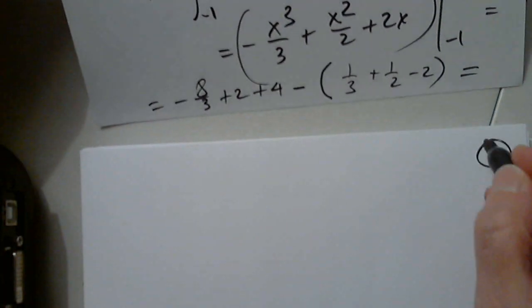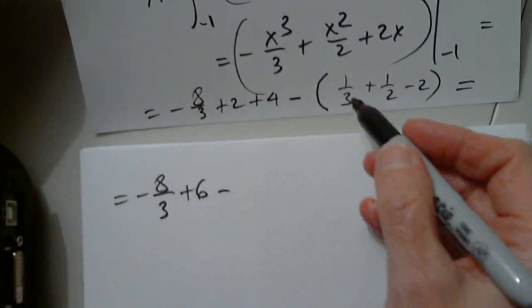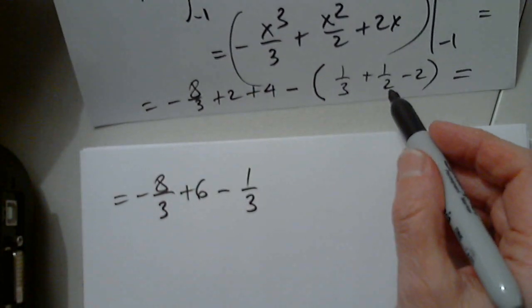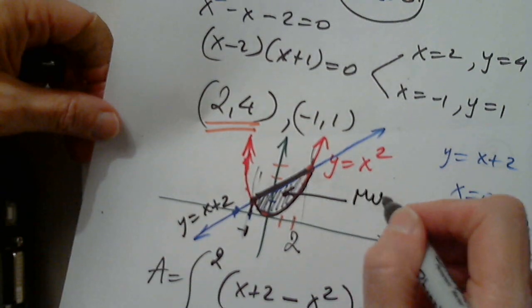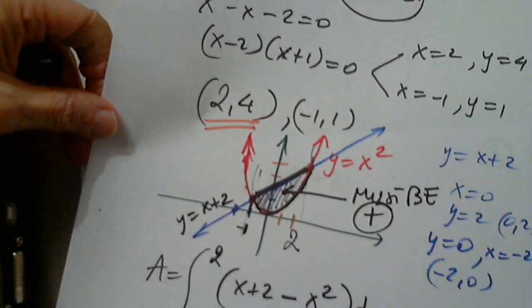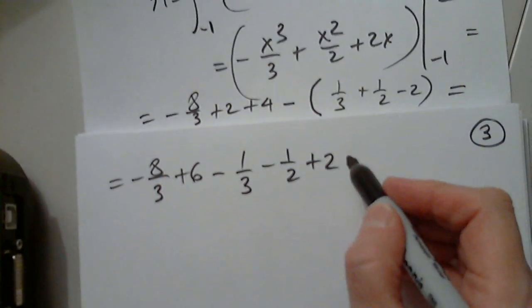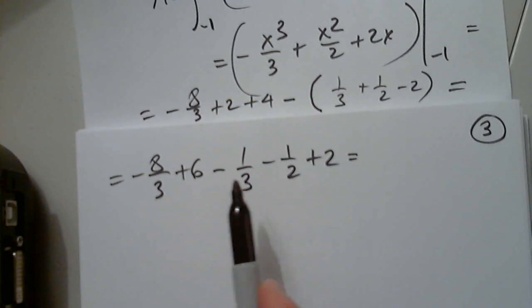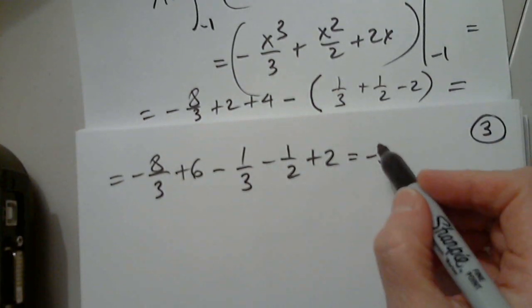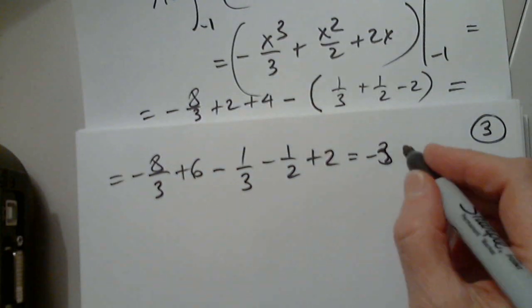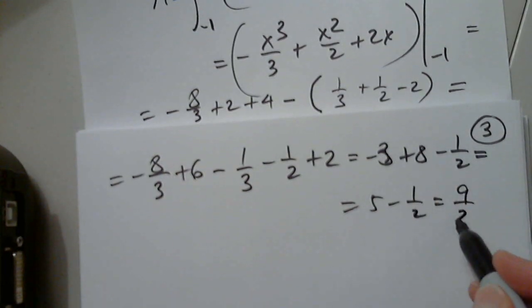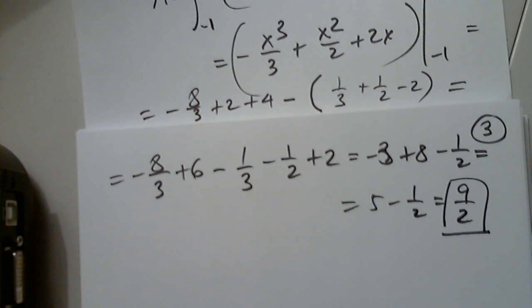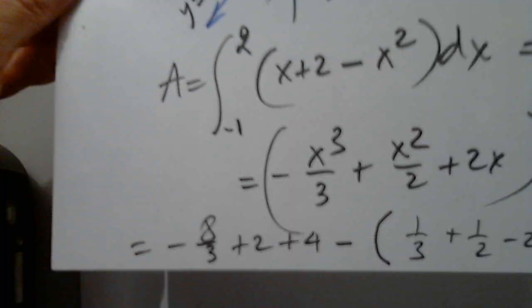So, I determine the number, negative 8 thirds, this is plus 6, this is minus 1 third, this is negative 1 half, and this is plus 2. Remember, this area is enclosed between two graphs, must be positive. Negative 8 thirds minus 1 third is negative 9 thirds, so this is negative 3. 6 plus 2 is 8, and negative 1 half. So, this is 5 minus 1 half, and 9 halves.